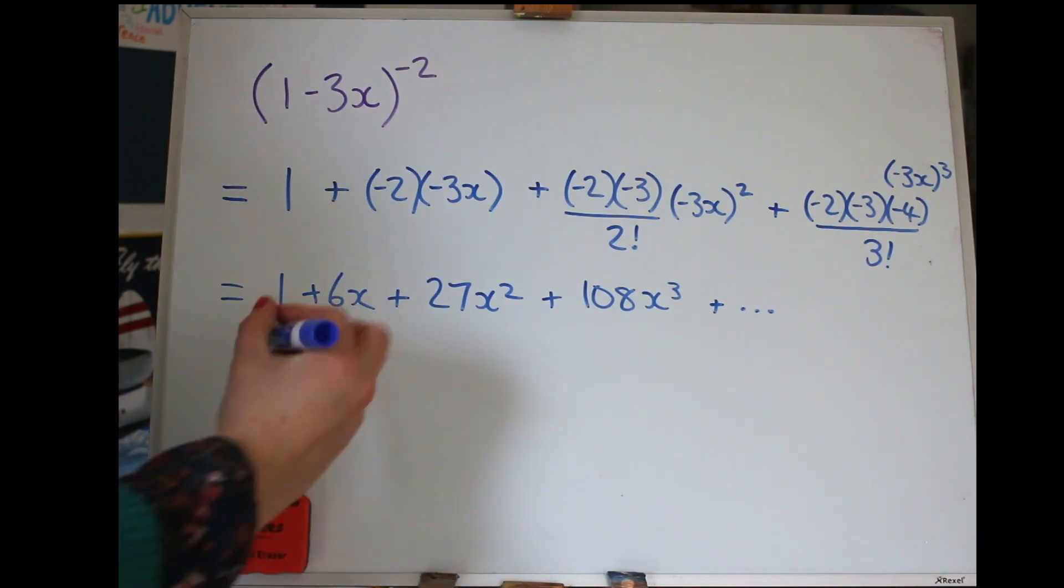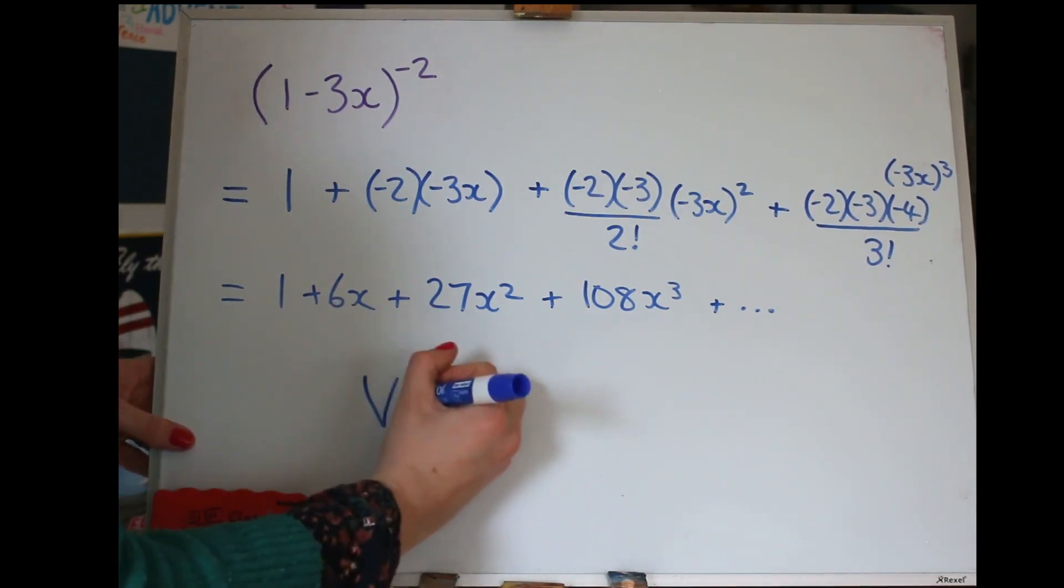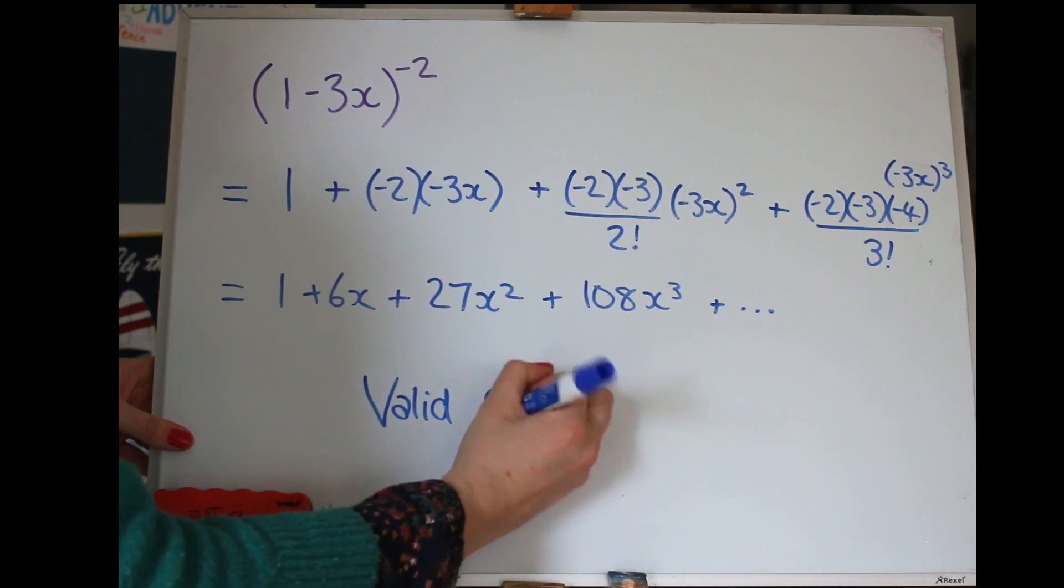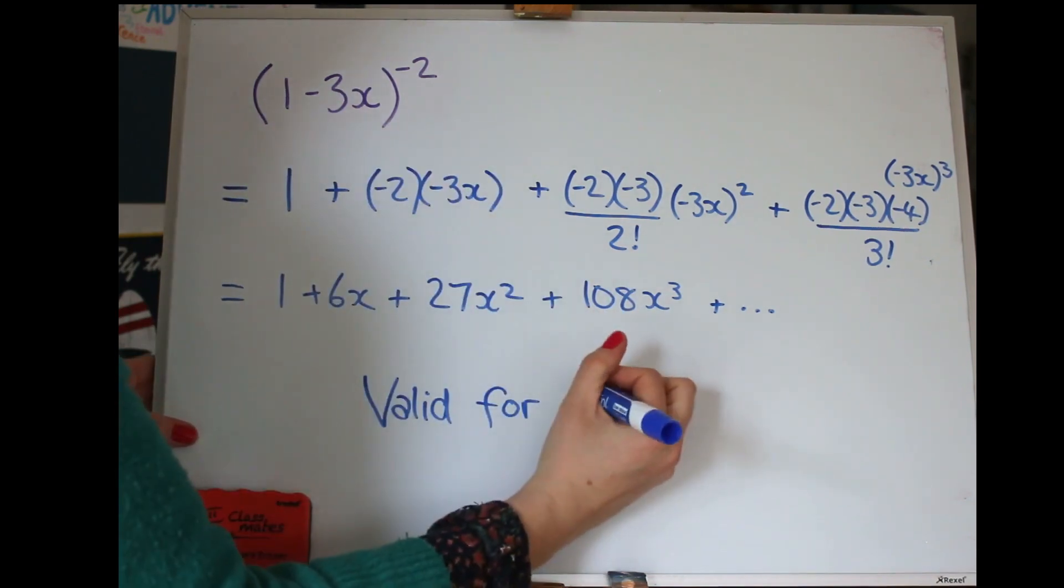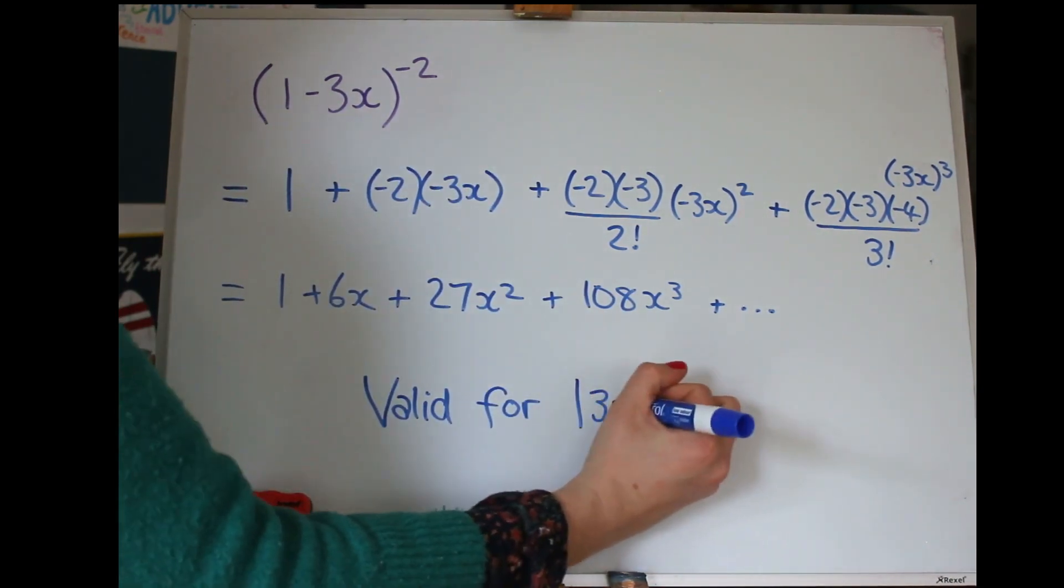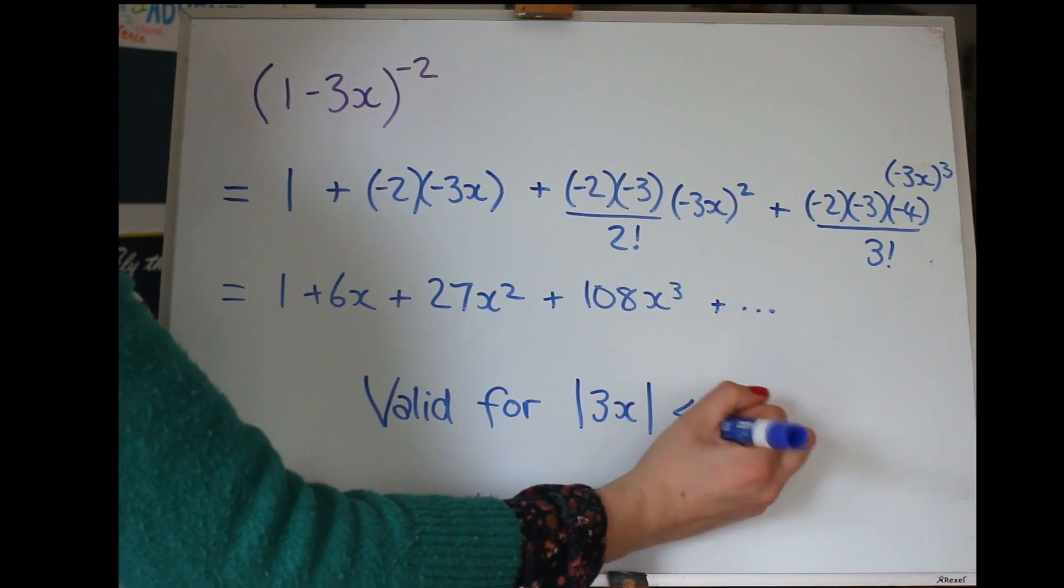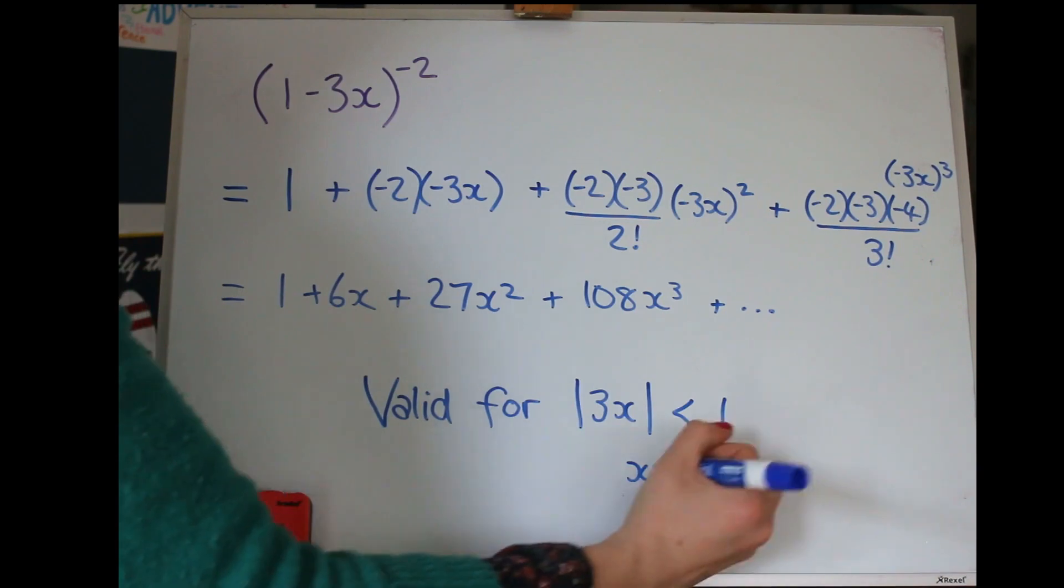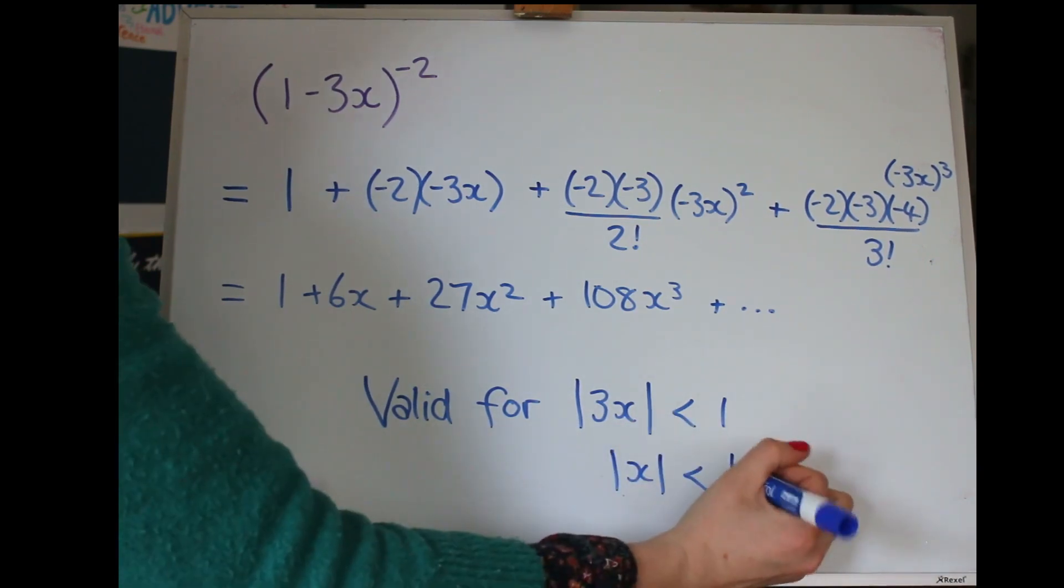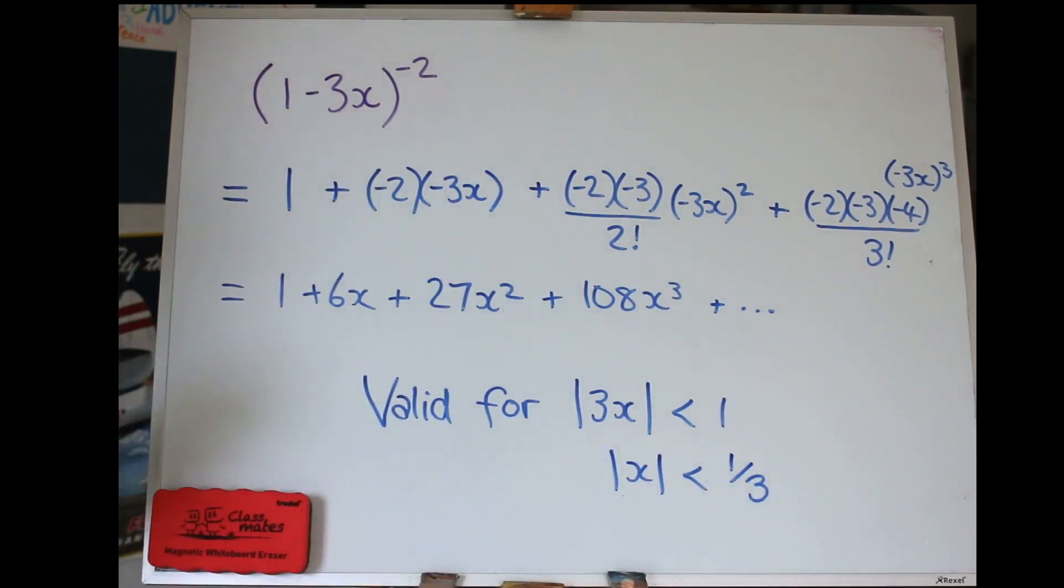All right, and I also said it's valid only in certain times, so we need to write the validity, and I said when this bit, the modulus of that is less than 1, so because it's a modulus, we can just disregard that negative sign, but that needs to be less than 1, and then you can move that 3 if you want to, and use a modulus of X as less than a third. Great, if you just watched me do that, you might want to rewind and have another go at that yourself. If not, let's look at another example.